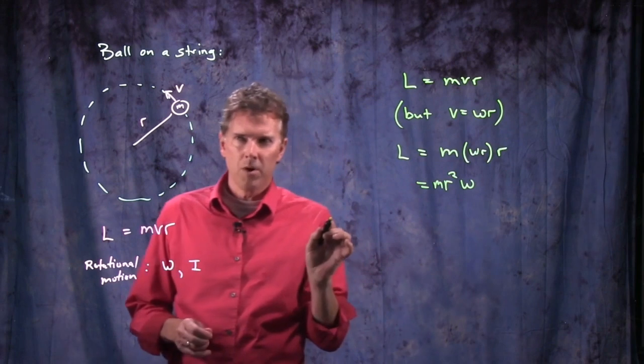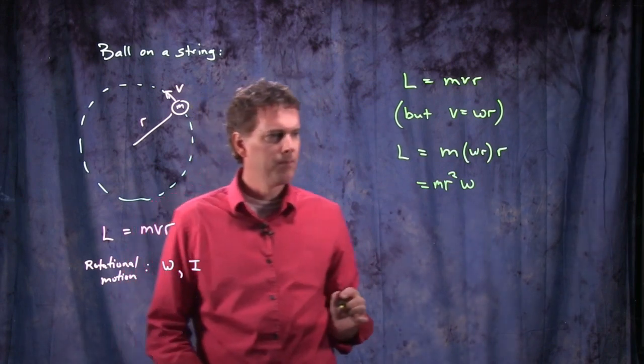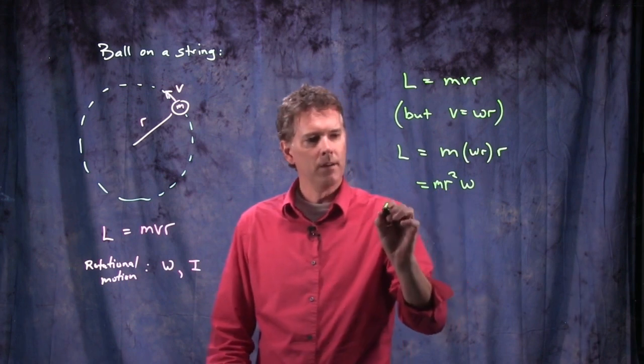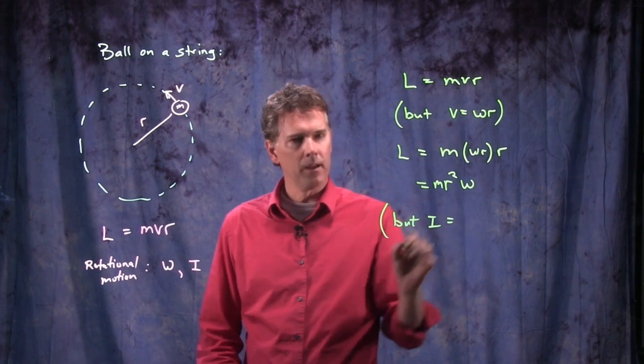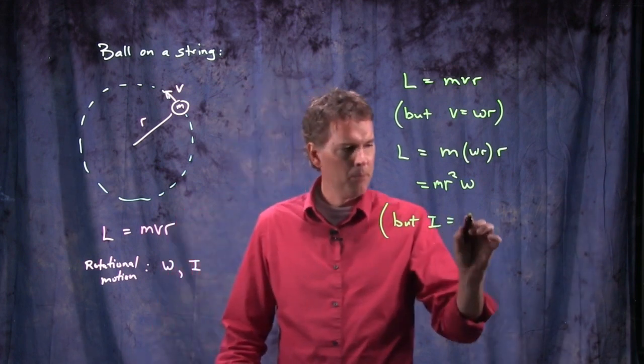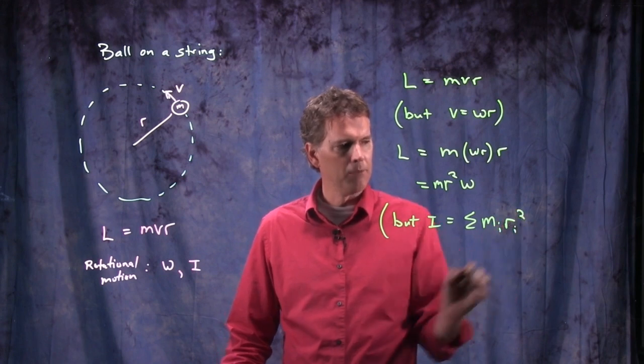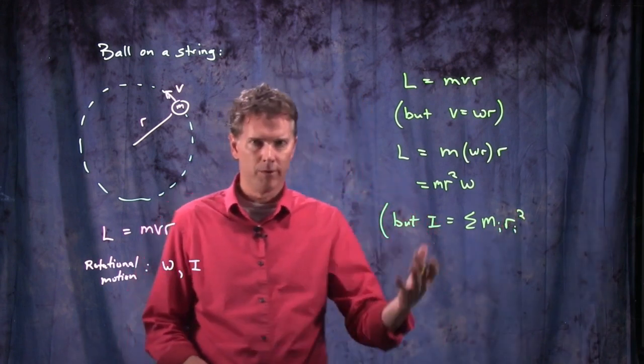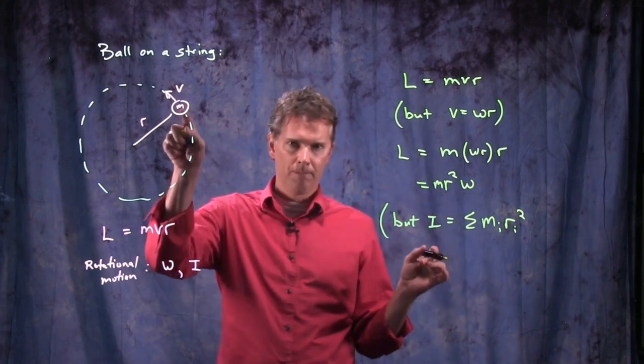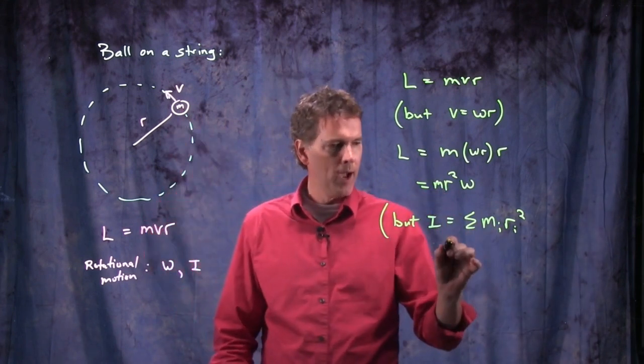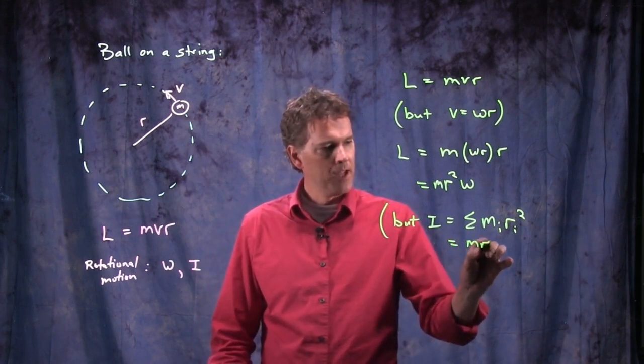But we also know that a single mass on the end of a string, we can write moment of inertia of that thing as what? Remember moment of inertia is sum of m sub i times r sub i squared. You have to sum over all the particles. And in this case we only have one particle and it is r away from the axis of rotation, and so we just get m r squared.